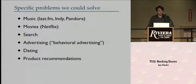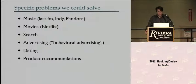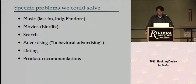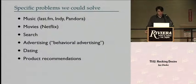Most of you are familiar with Netflix — that's one of the most prominent uses of collaborative filtering online. They use it to recommend movies. This approach can also be used for search, as an alternative to page rank, to rank search results in a way that is tailored to you specifically based upon your past behavior.